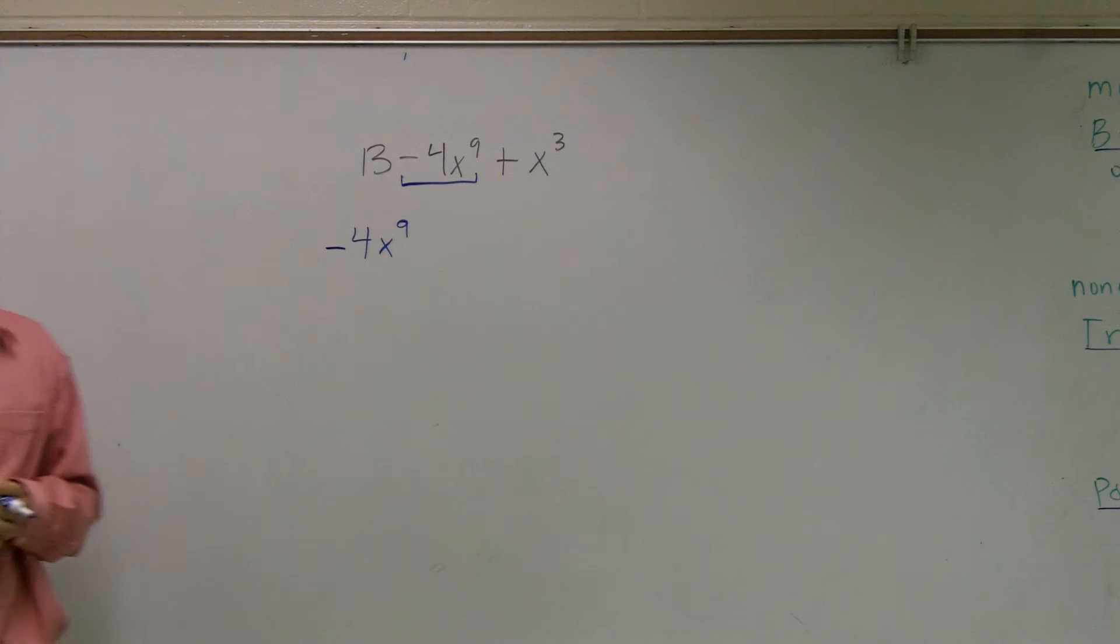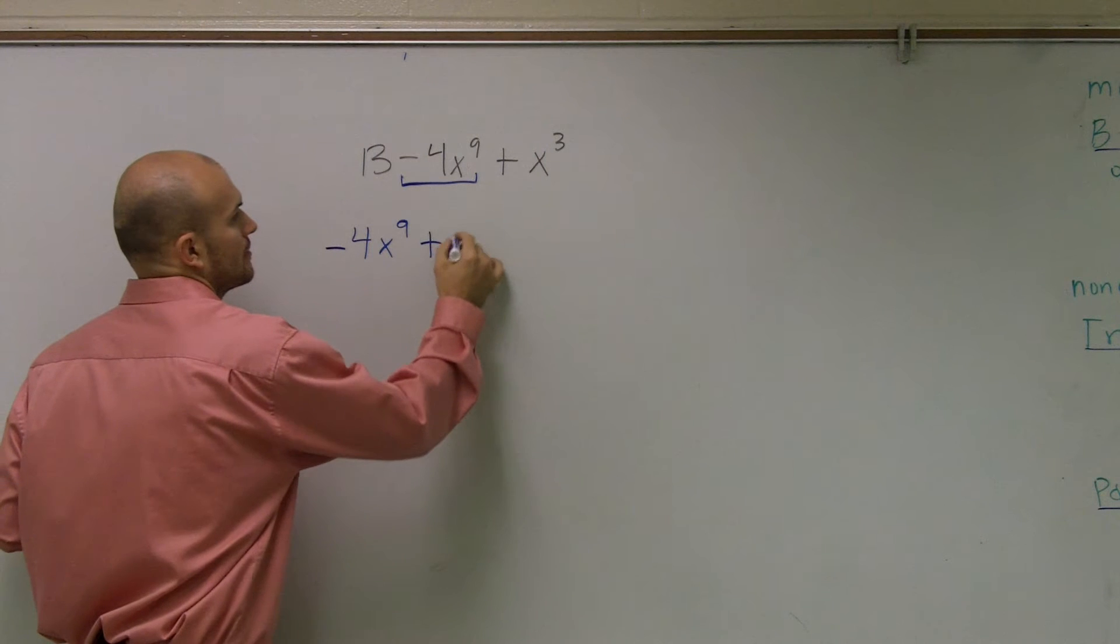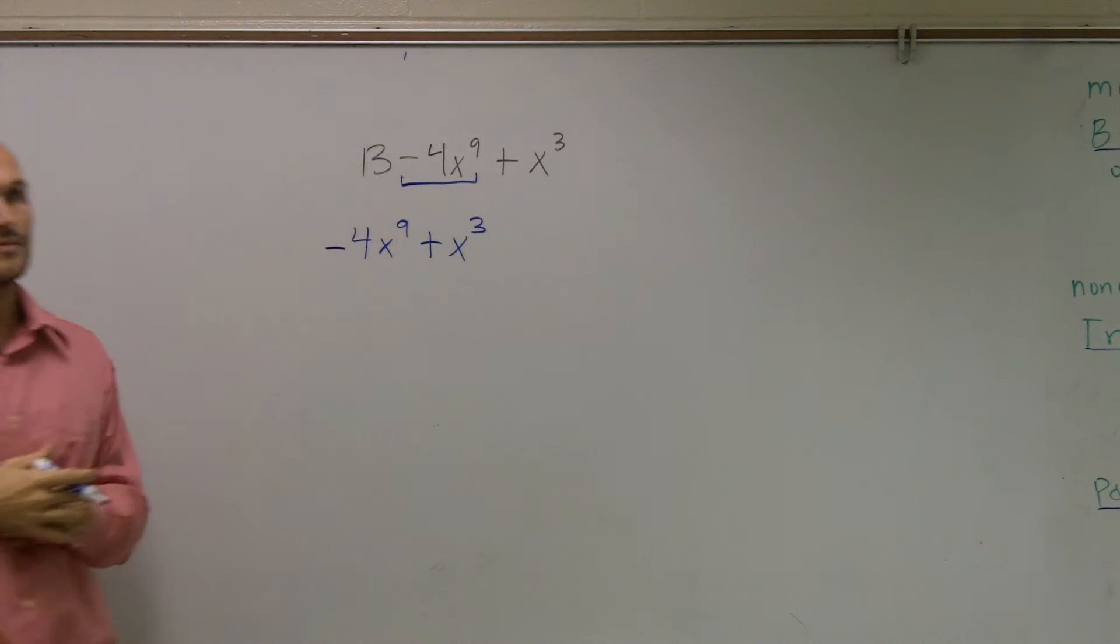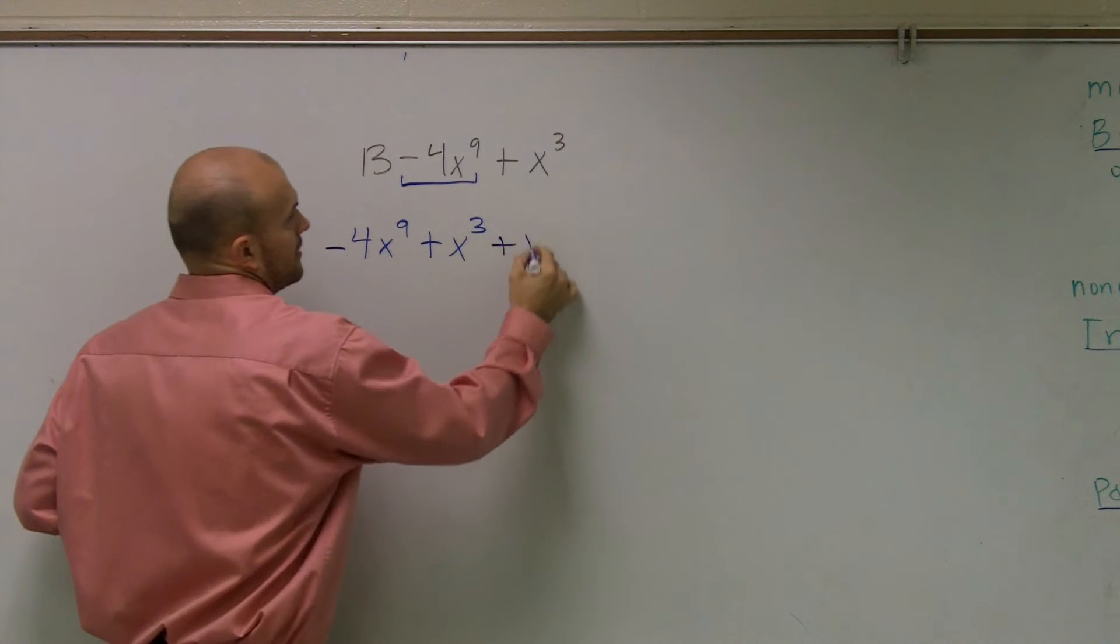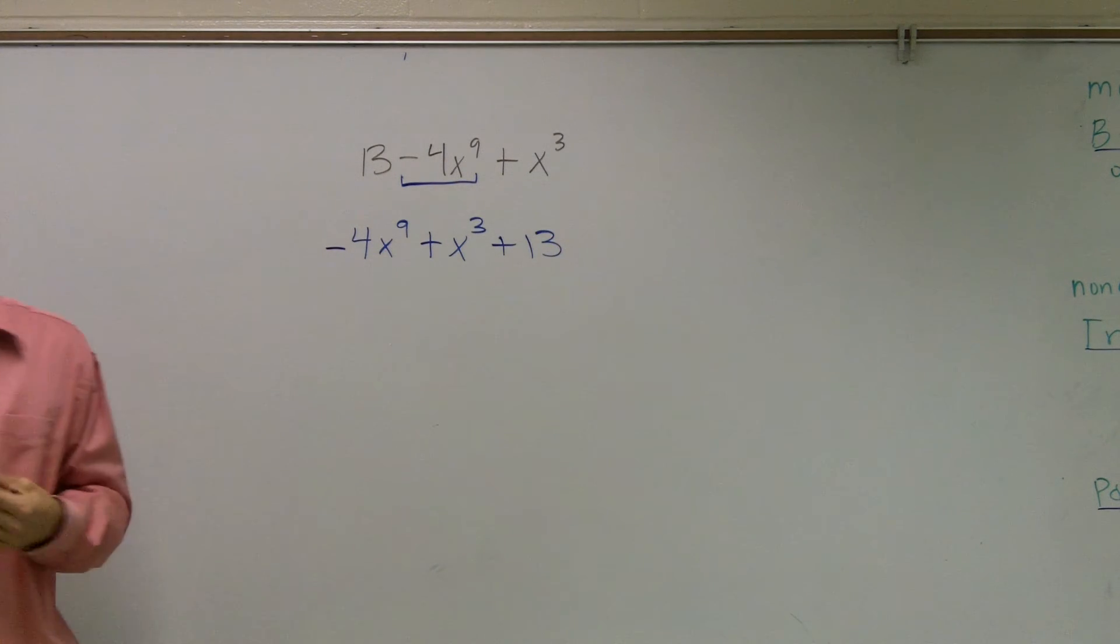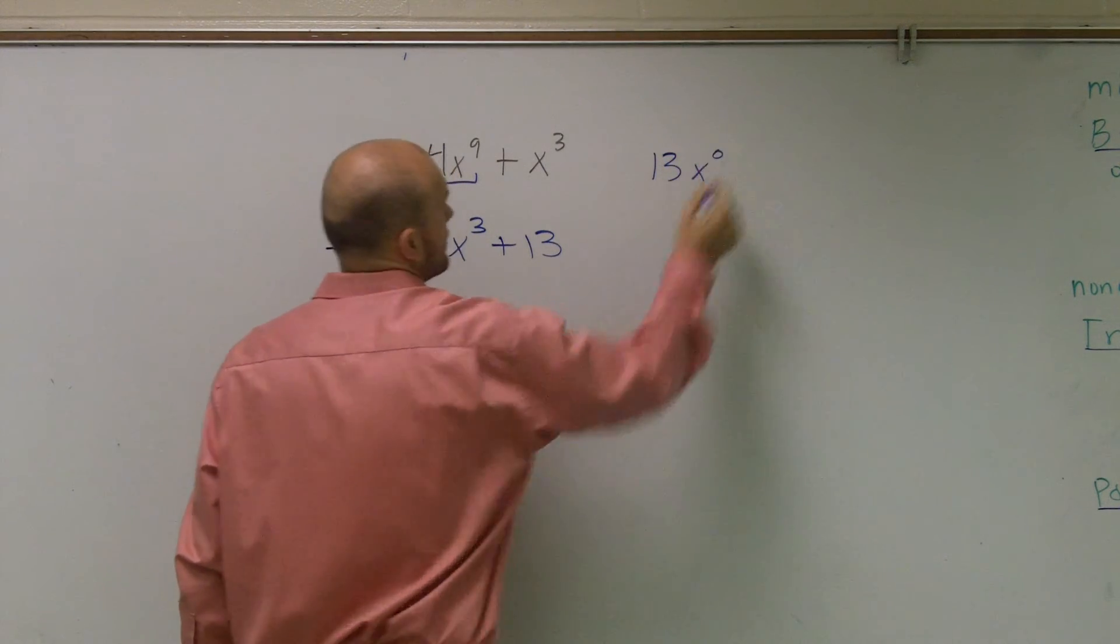Then the next largest exponent is x to the 3rd. Last, we have 13 as the constant. And 13 does actually have an exponent—it's to the 0 power.